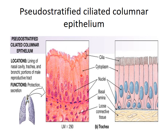This is a diagrammatic representation of the pseudo-stratified epithelium. You can see the short basal cells and the tall columnar ciliated cells, showing the lining of the respiratory tract.